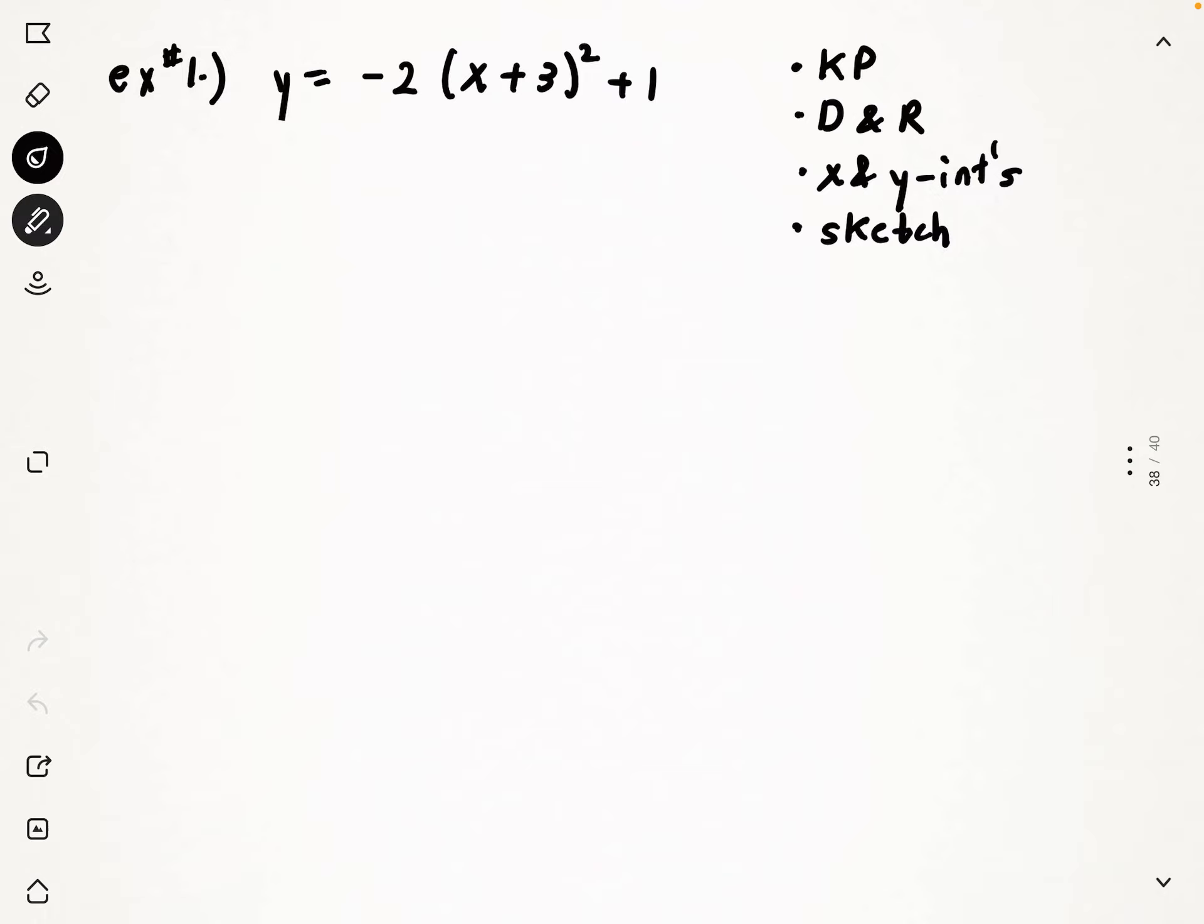Usually with the intercepts I may have to just fine tune the graph a little bit. Let's take a look at this function right here. Let's do a mapping notation first. They're all going to be presented to you in transformational form for the most part, so what you can do is you can immediately make a mapping notation, and with the mapping notation you can plug in the key point.